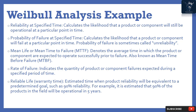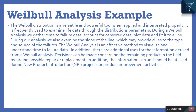Reliable life or warranty time is the estimated time when product reliability will be equivalent to a predetermined goal, such as 90% reliability. For example, it is estimated that 90% of the products in the field will be operational in 5 years. The Weibull distribution is a versatile and powerful tool when applied and interpreted properly. It is frequently used to examine life data through the distribution's parameters.